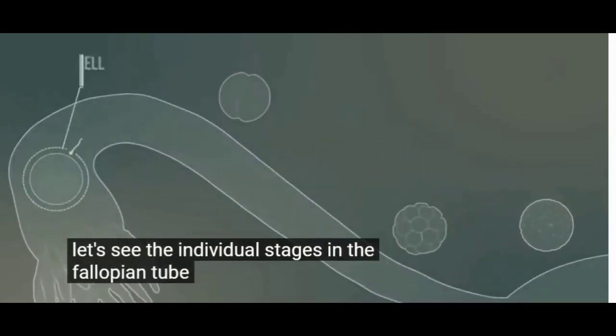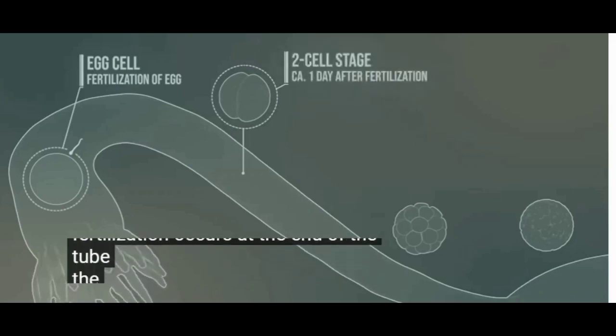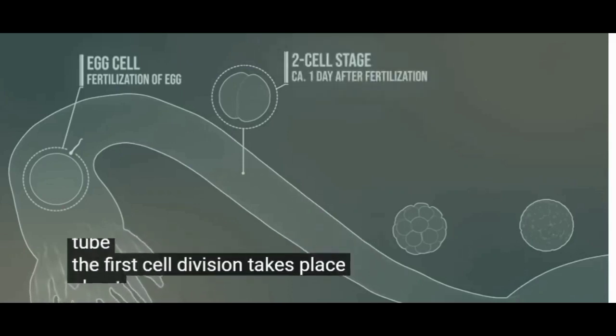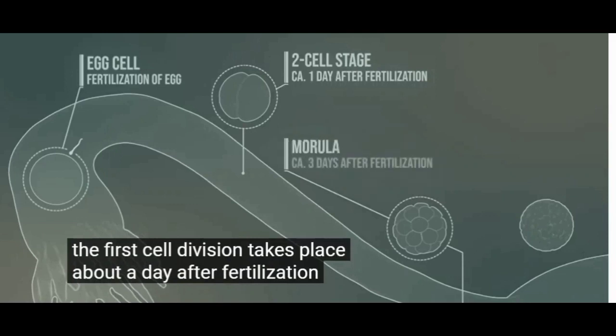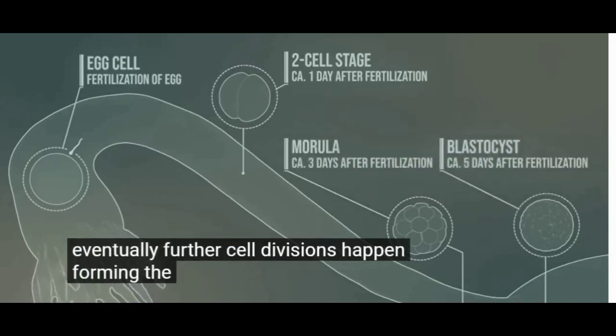Let's see the individual stages in the fallopian tube. Fertilization occurs at the end of the tube. The first cell division takes place about a day after fertilization. Eventually, further cell divisions happen forming the morula.